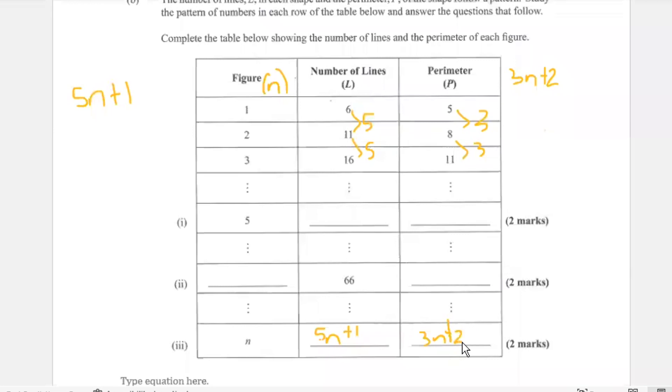So therefore, if our figure number is 5, what is the number of lines? 26. So it is 5 times 5 plus 1, so 5 times 5 is 25 plus 1, and we get 26. That is how we got 26 here.